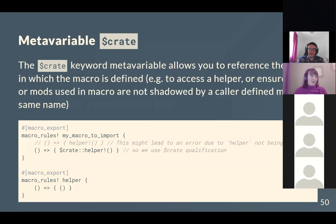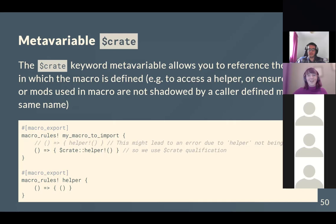$crate is a meta-variable that is implicitly always available in a macro. It lets you reference the crate in which the macro is defined, which helps avoid clashes between the macro's types and the calling code's types — for example if the caller has renamed the standard library or hasn't imported something the macro needs.